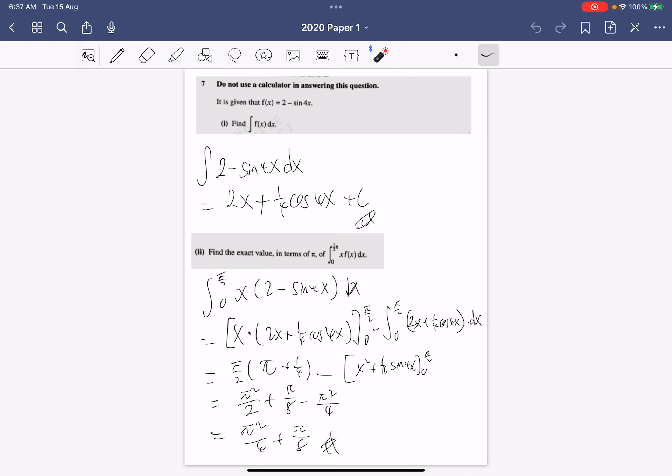Now we're supposed to find the exact value in terms of pi for the integral of x times f(x) dx. So we now know the integral of f(x) dx is this, so how do we do it? We can just integrate by parts or we can just multiply in and integrate normally. For me, I just integrate by parts because the first part we already integrated this whole chunk and when we differentiate this is 1.